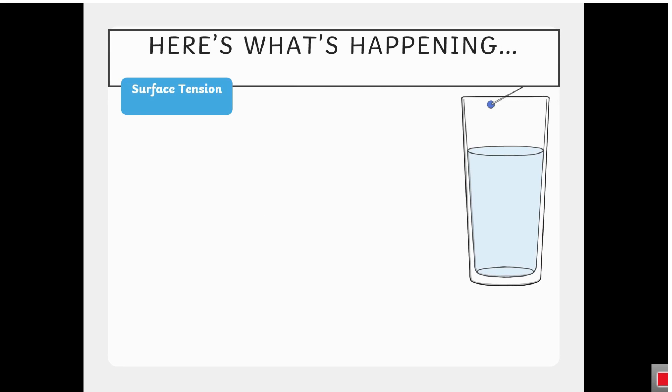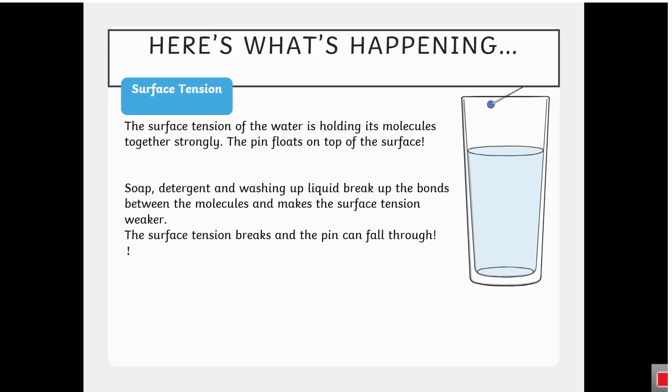Here's what's happening. Surface tension. The surface tension of the water is holding its molecules together strongly. The pin floats on top of the surface. Soap, detergent, and washing up liquid break up the bonds between the molecules and makes the surface tension weaker. The surface tension breaks, and the pin can fall through.